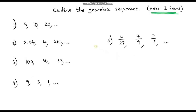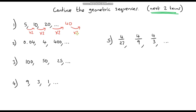The first one: to go from 5 to 10 we're multiplying by 2. So we do the same thing — multiply by 2 for the next term. 20 times 2 gives us 40, and then 40 times 2 gives us 80.